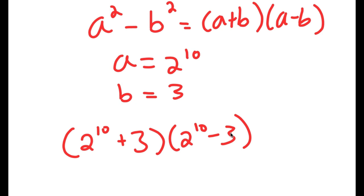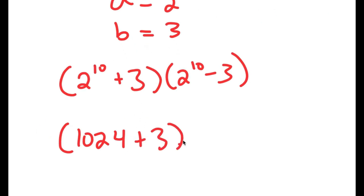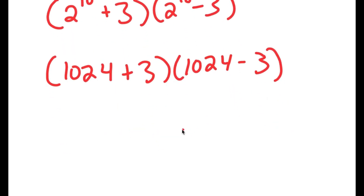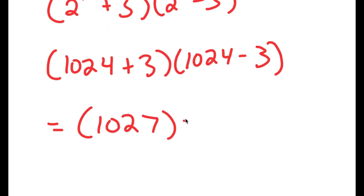Now, 2 to the power of 10 is equal to 1024. So I get 1024 plus 3 times 1024 minus 3, which is equal to 1027 times 1021.